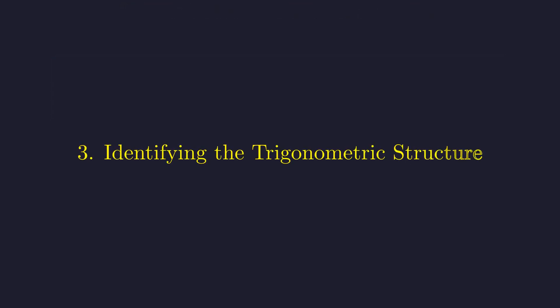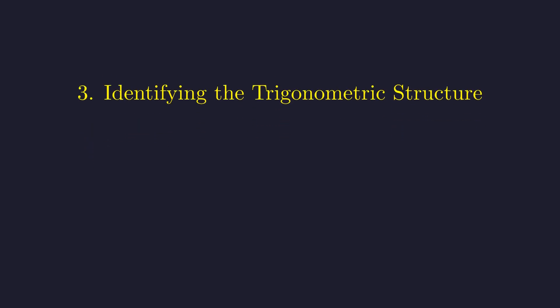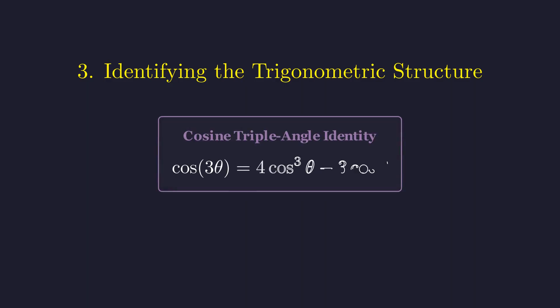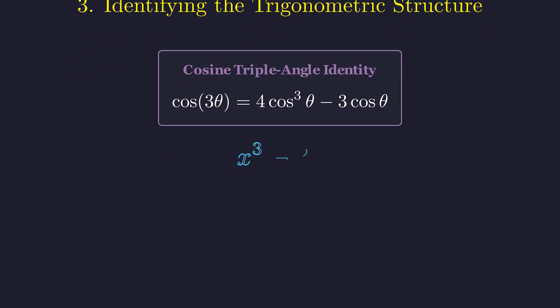Here's where things get interesting. The expression x cubed minus 3x has a very particular structure that should remind you of a trigonometric identity. The cosine triple angle formula says that cosine of 3 theta equals 4 cosine cubed theta minus 3 cosine theta. Notice how similar this looks to our expression. Our expression x cubed minus 3x is crying out to be written in terms of cosine.